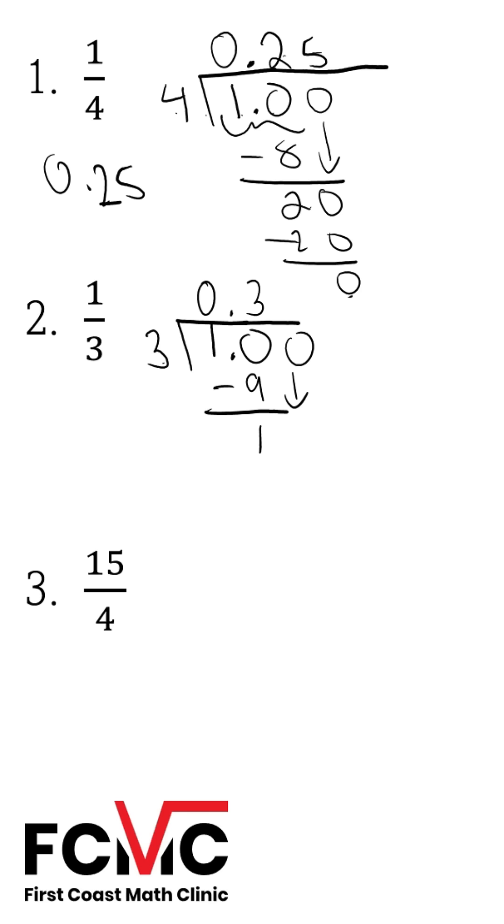Put a zero in the hundredths column, bring that zero down. We get another 10. Put a three. Three times three is nine. Subtract, we get a one. We're going to continue this pattern. We're going to get a repeating three, so we can cut our answer off right here. And we're going to get 0.3 repeating or three-tenths repeating.